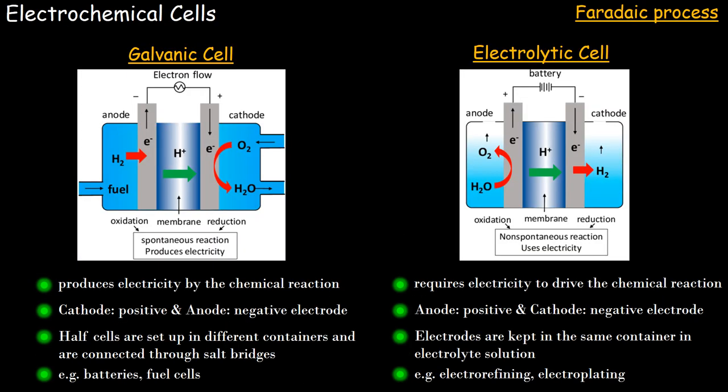Now, we talk about a few electrochemical cells. An electrochemical cell is something where we either give current and generate some chemical reaction, or we exploit some chemical reaction to gain some current. The first one is the galvanic cell. In a galvanic cell, it produces electricity by chemical reaction — we are exploiting a chemical reaction to gain certain electrical energy, like in a fuel cell where we put in some chemical and gain electricity. For a galvanic cell, cathode is the positive and anode is the negative electrode. Half cells are set up in different containers and are connected by a salt bridge or some other porous plug connection.